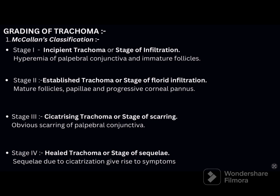For grading of trachoma, there are two classifications: McCallen's classification and the WHO classification. In McCallen's classification: Stage 1 is incipient trachoma or stage of infiltration — hyperemia of palpebral conjunctiva and immature follicles. Stage 2 is established or florid infiltration — follicles, papillae, and progressive corneal pannus. Stage 3 is cicatrizing trachoma or stage of scarring — obvious linear, irregular, or star-shaped scarring of palpebral conjunctiva.